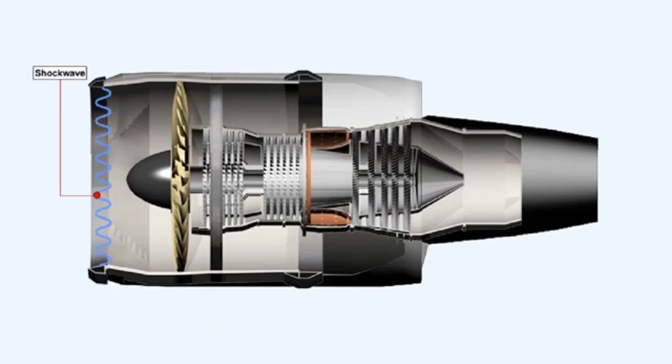The pitot type of intake maximizes the use of ram effect on the air due to the aircraft forward speed and suffers only a minimum loss of ram pressure as the aircraft attitude changes. However, the efficiency of the pitot type of engine air intake reduces as the aircraft approaches sonic speed, due to the formation of a shock wave at the engine intake lip.